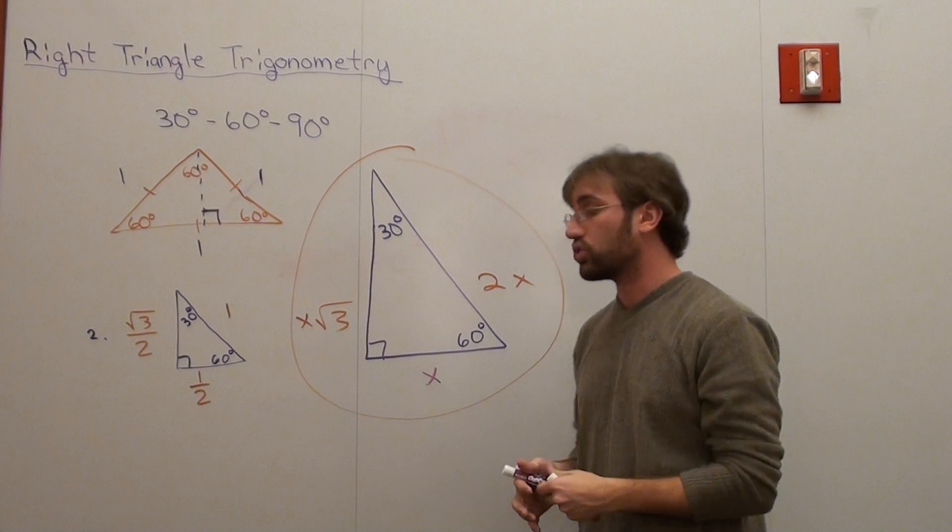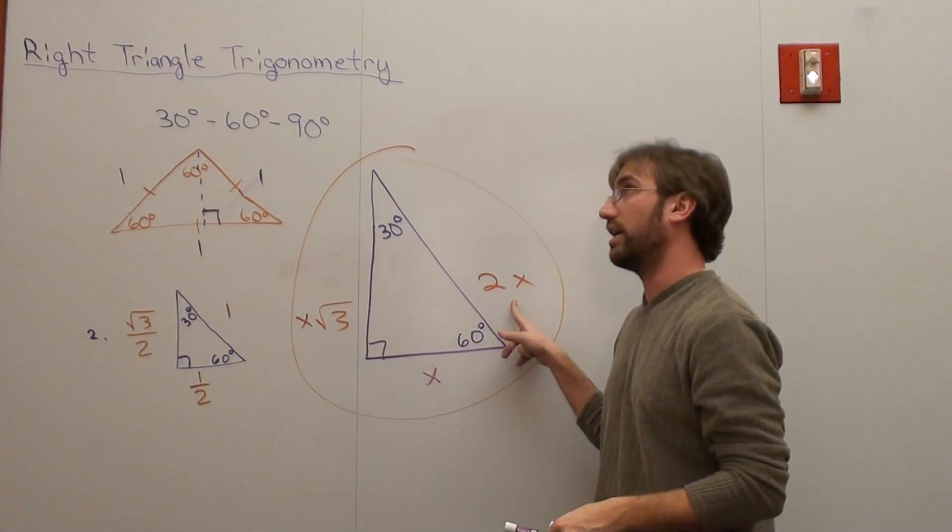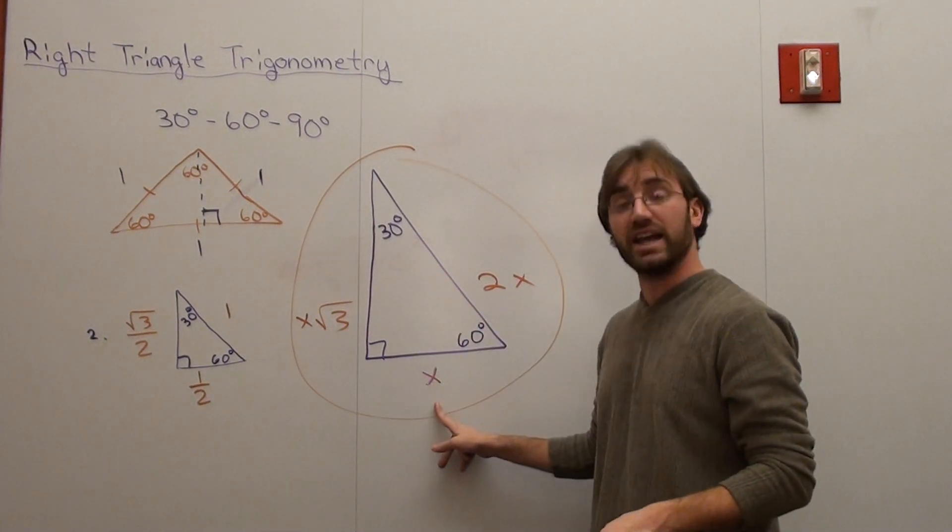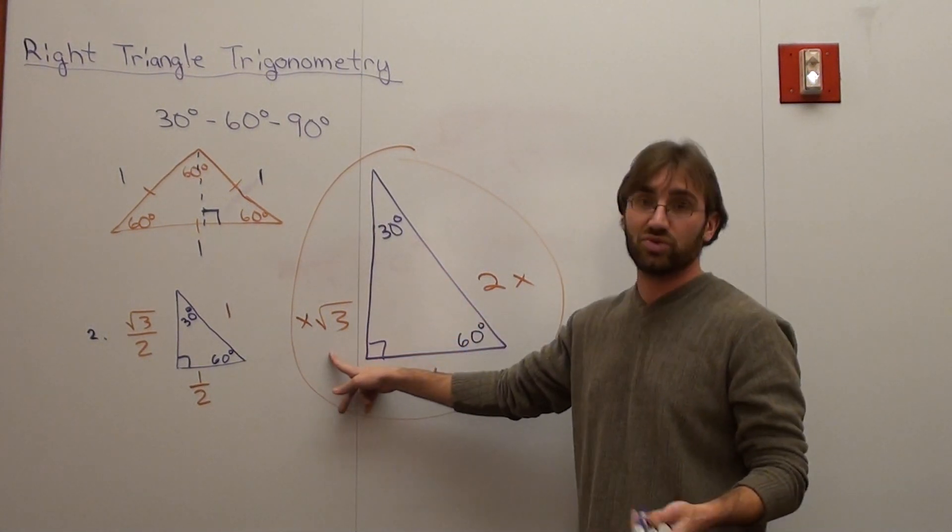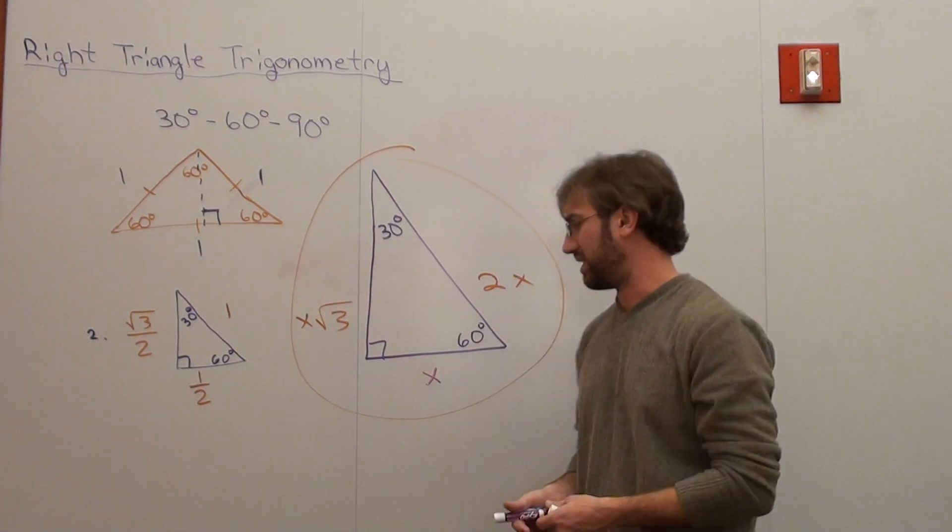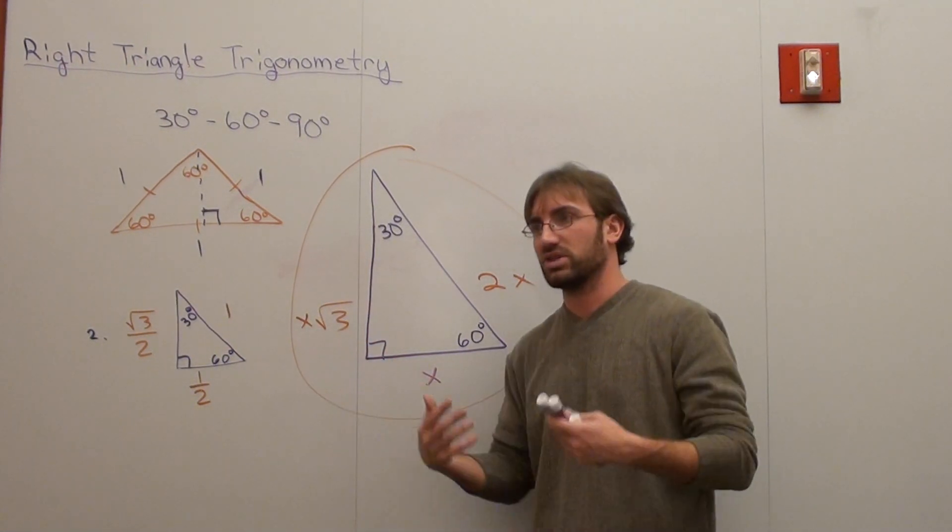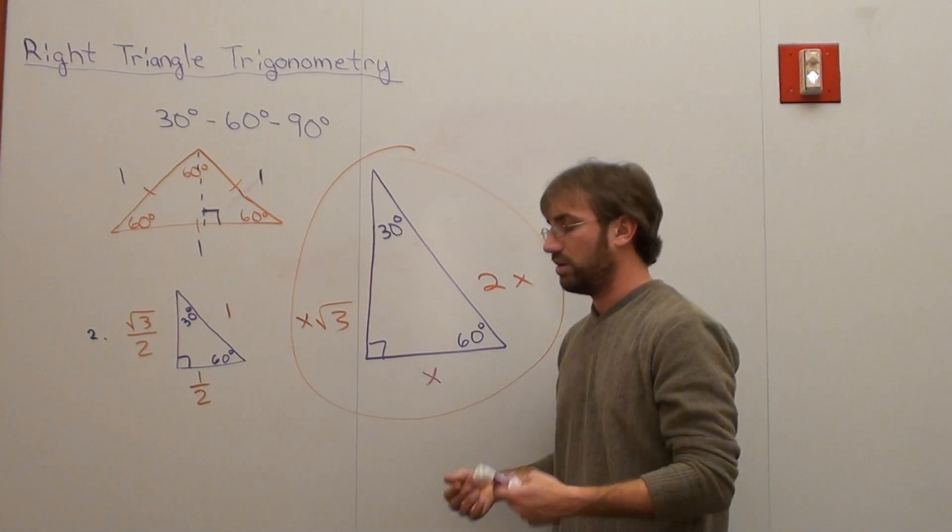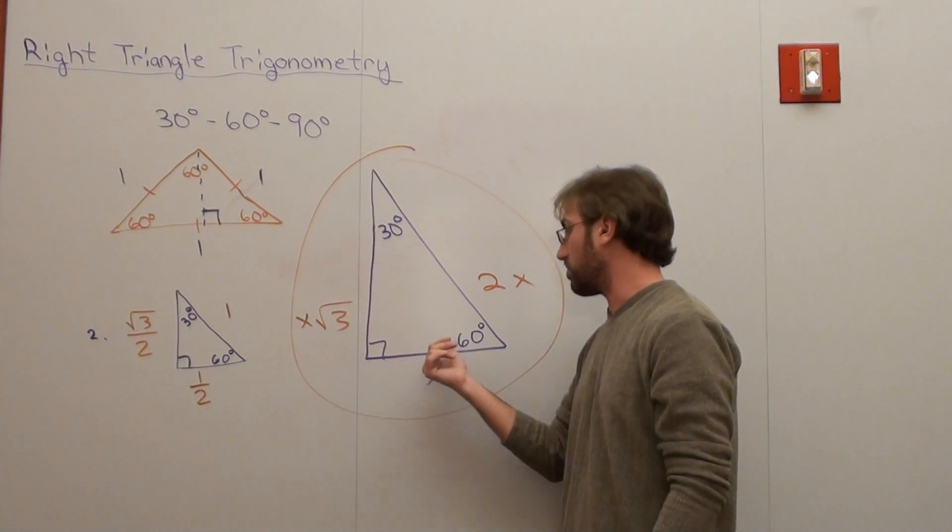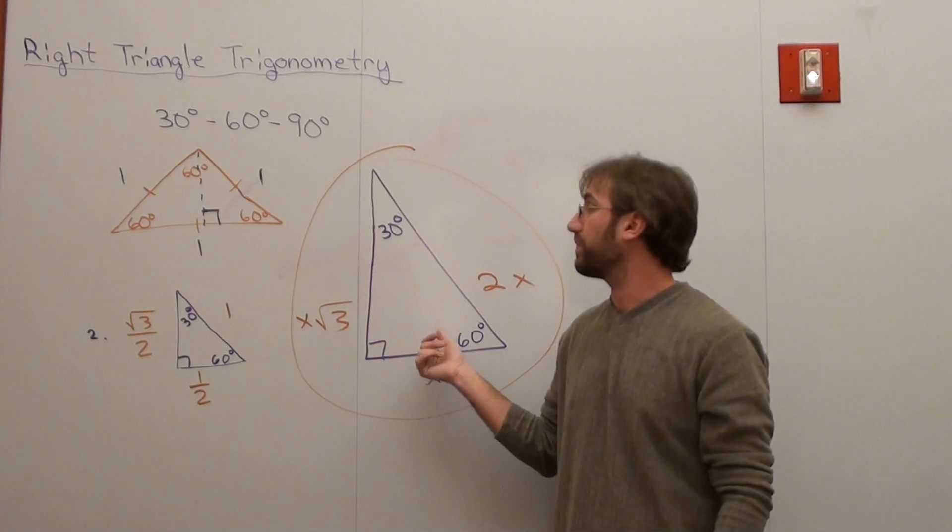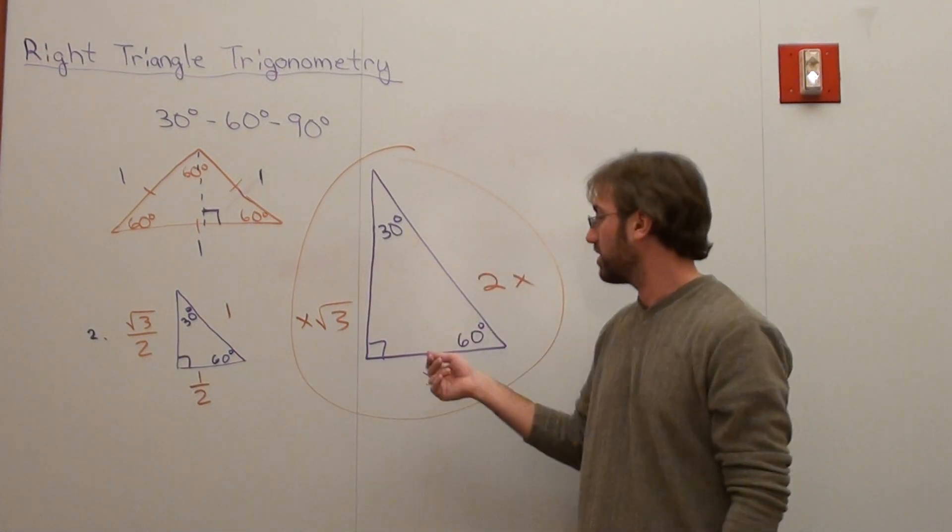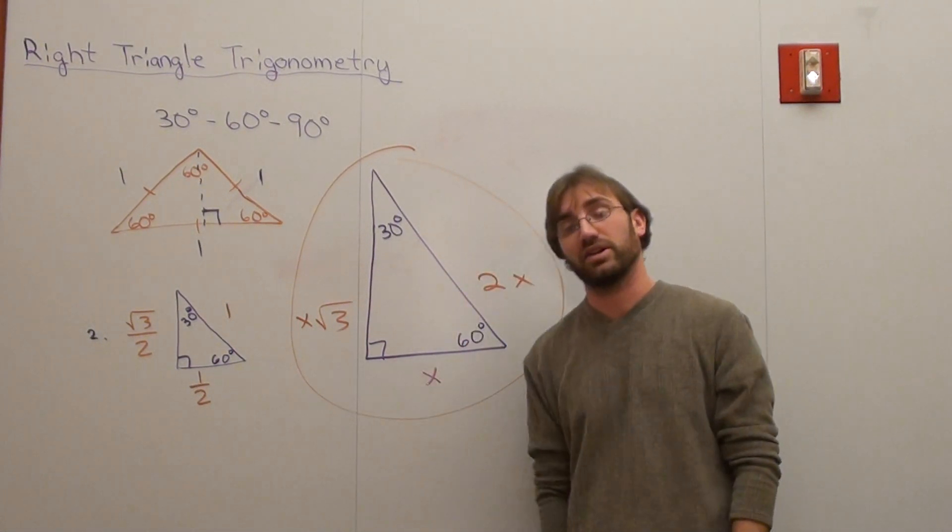So there you go. Our 45-45-90 triangle is x, x, x root two. Our 30-60-90 triangle is the 30 side is x, the 60 side is x root three, and the 90 side is 2x. And what I tell my students to remember that is this. What's bigger? x times the square root three or x? So I go, x times the square root three. Okay, so x square root three goes with 60 because 60 is a bigger angle. x goes with 30. So how do you remember 2x? I'm like, I don't. I just memorize it. So the 90 is 2x in this particular case.